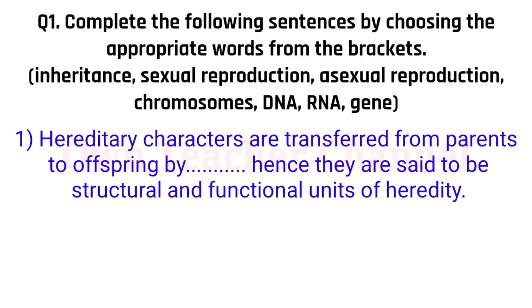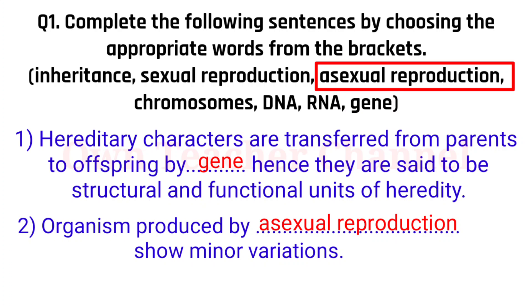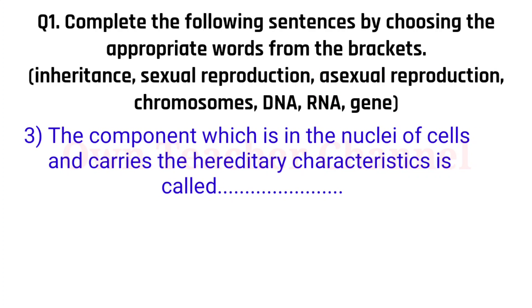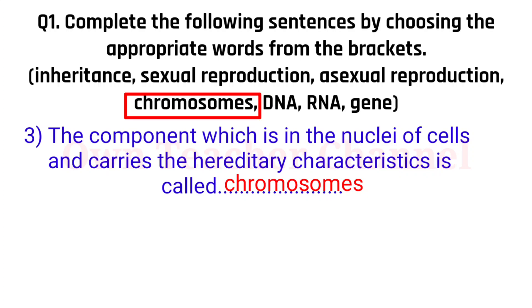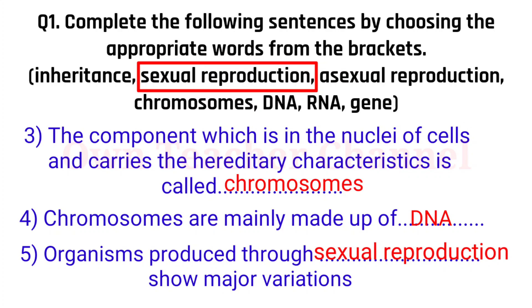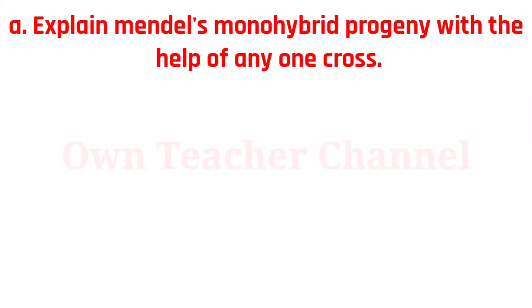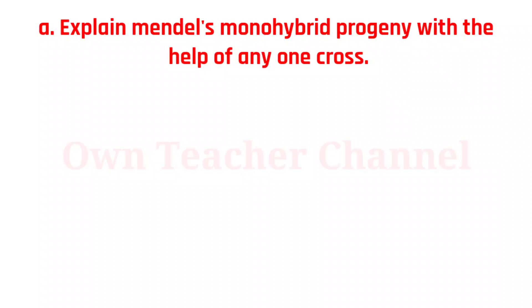One: Hereditary characters are transferred from parents to offspring by genes; hence they are said to be structural and functional units of heredity. Two: Organisms produced by asexual reproduction show minor variations. Three: The component in the nuclei of cells that carries hereditary characteristics is called chromosomes. Four: Chromosomes are mainly made up of DNA. Five: Organisms produced through sexual reproduction show major variations.